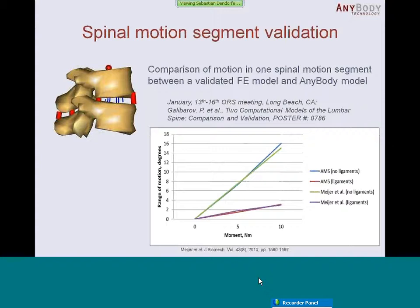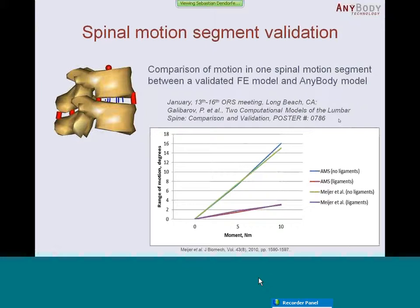The first validation work relates directly to the force-dependent kinematics. It is about validating the implementation of the ligaments and passive stiffness of the disc. Basically it is a comparison of the motion of one functional motion segment between a validated FE model and the AnyBody model. We compared the FE model with and without ligaments against the AnyBody model with and without ligaments, and you can see a pretty good fit between these two models. This is part of an abstract that will be presented at the ORS in January in Long Beach, California.